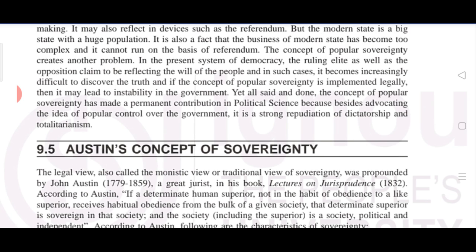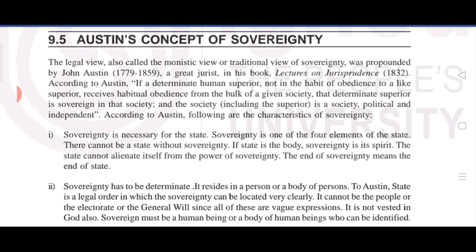Then, Austin's concept of sovereignty: the legal view, also called the monistic view or traditional view of sovereignty, was propounded by John Austin — a great jurist — in his book 'Lectures on Jurisprudence.' According to Austin, if a determinate human superior not in the habit of obedience to a like superior receives habitual obedience from the bulk of a given society, that determinate superior is sovereign in that society, and the society is a political and independent society.